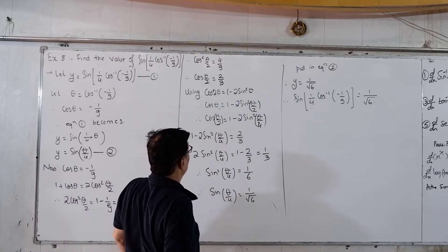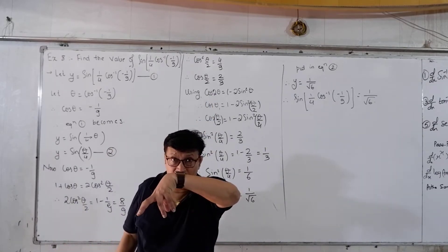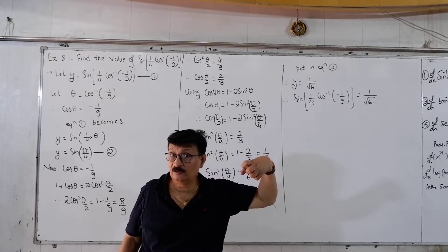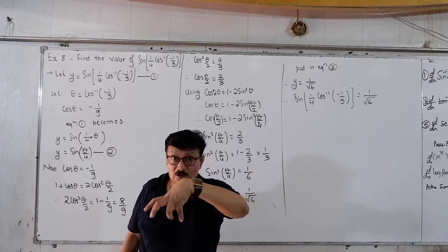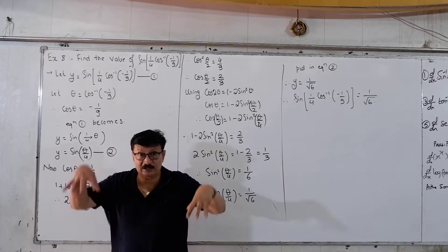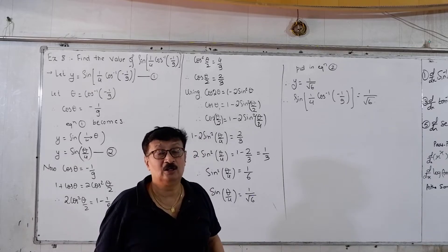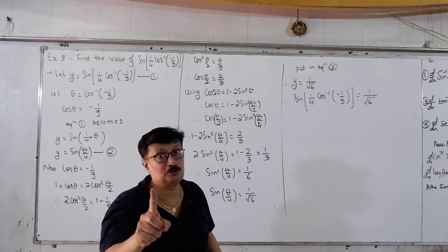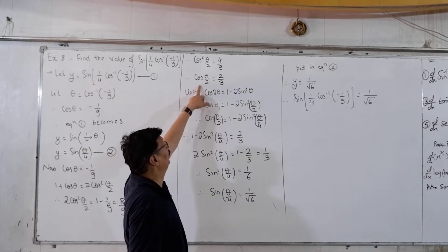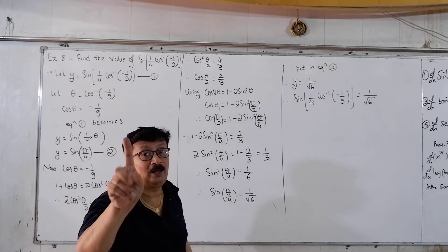Why is cos(θ/2) = +2/3 and not negative? The principal range of cos⁻¹ is [0, π], so θ/2 is in [0, π/2] — the first quadrant — where cosine is positive. Therefore cos(θ/2) cannot be negative.